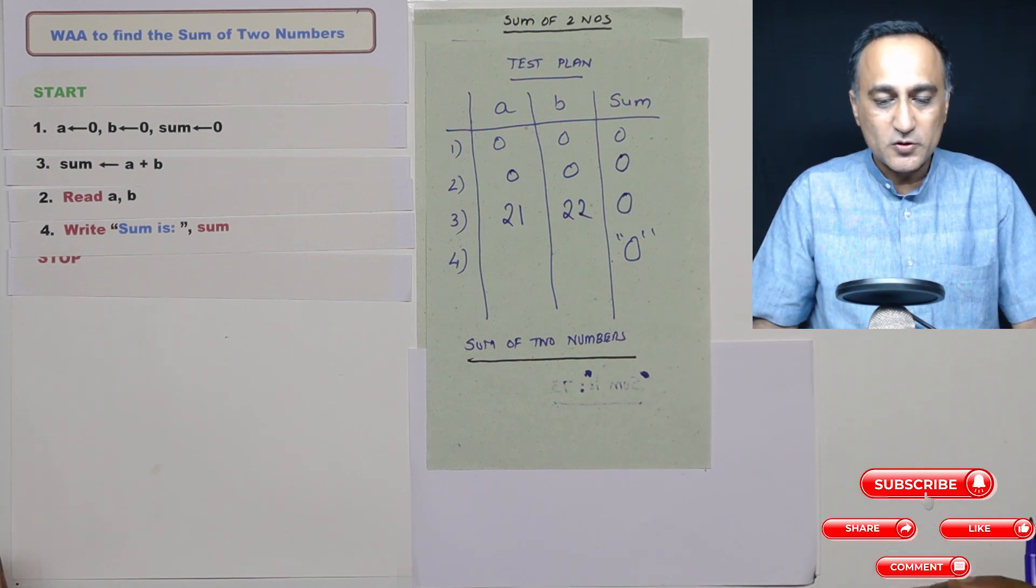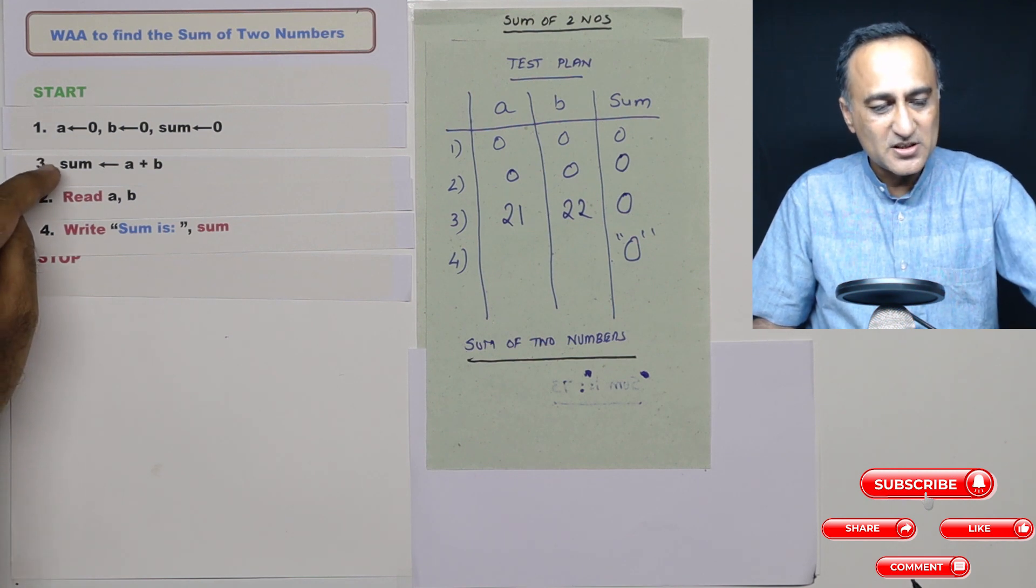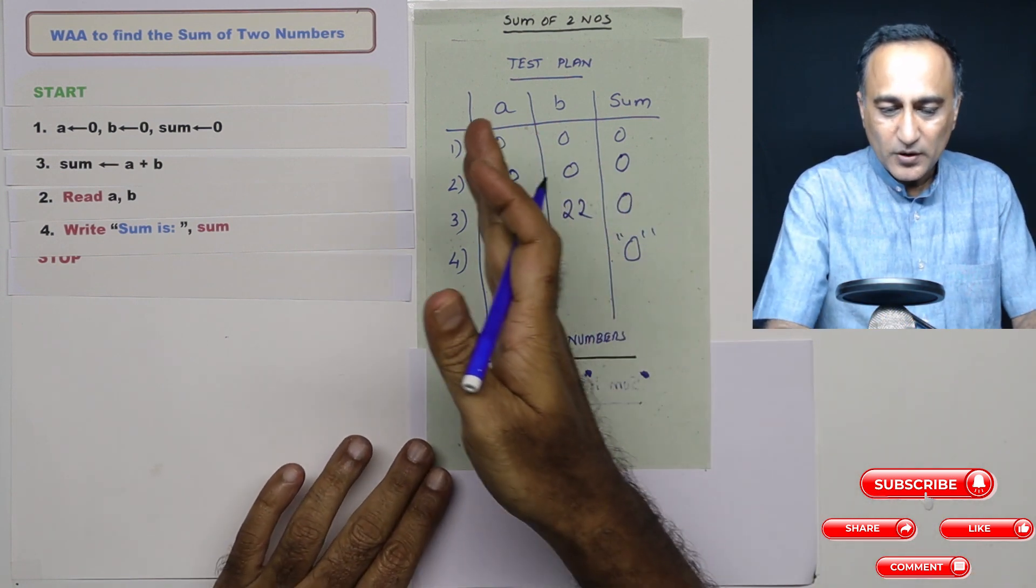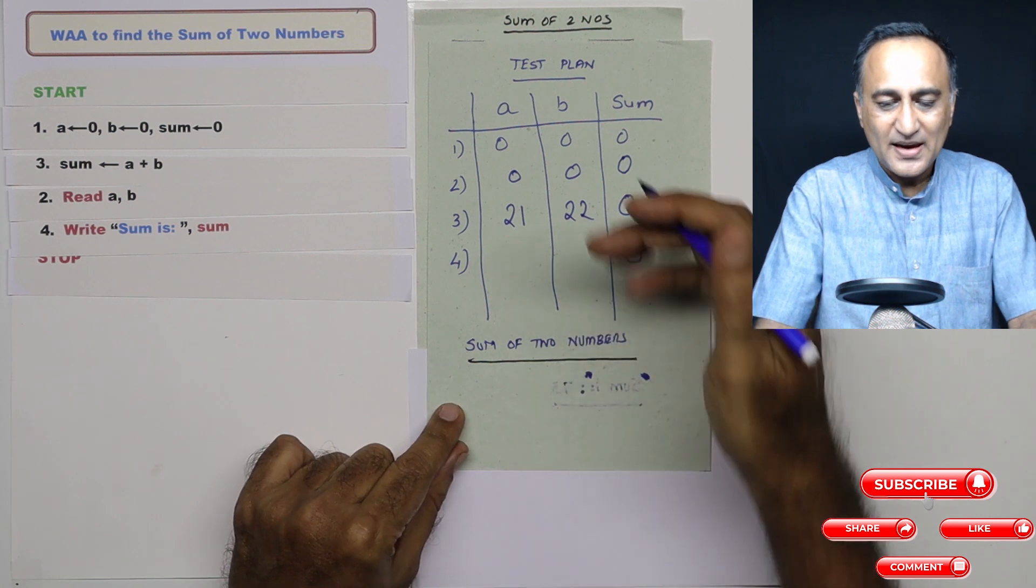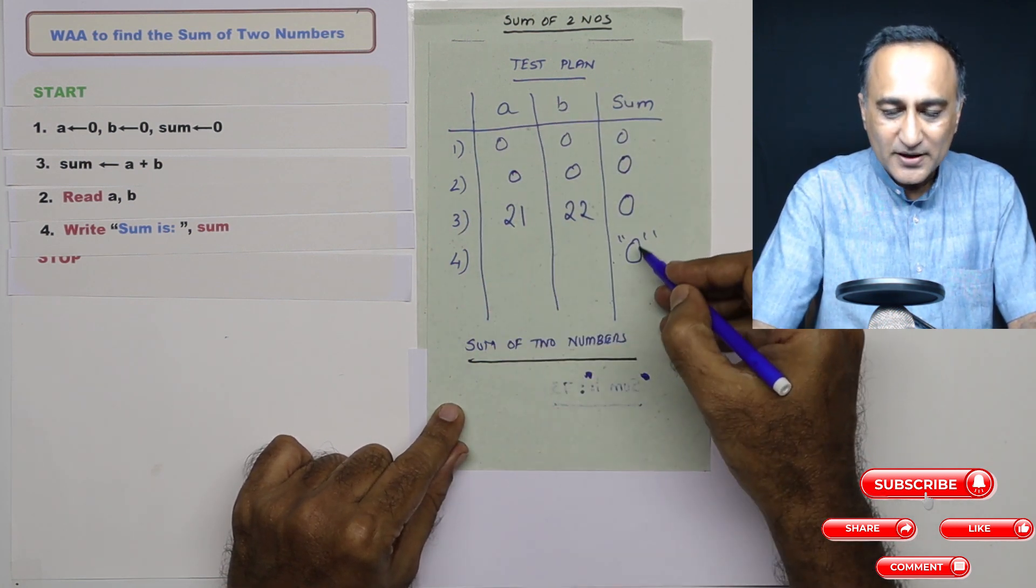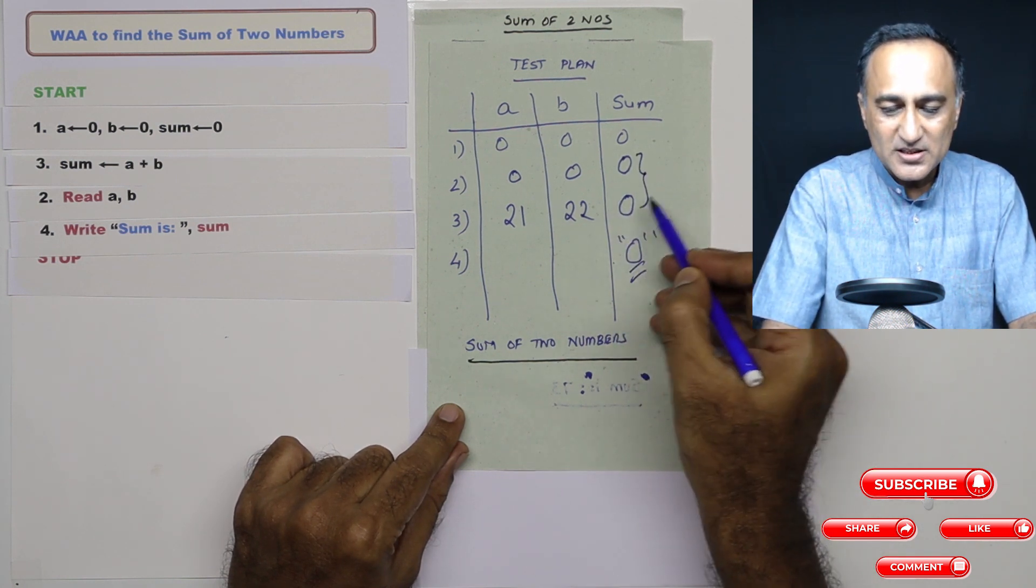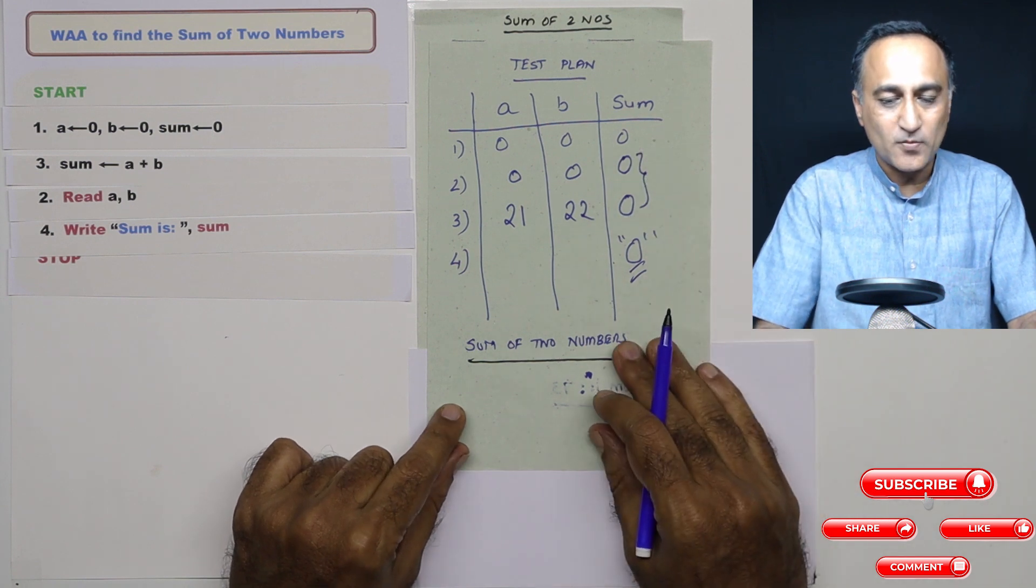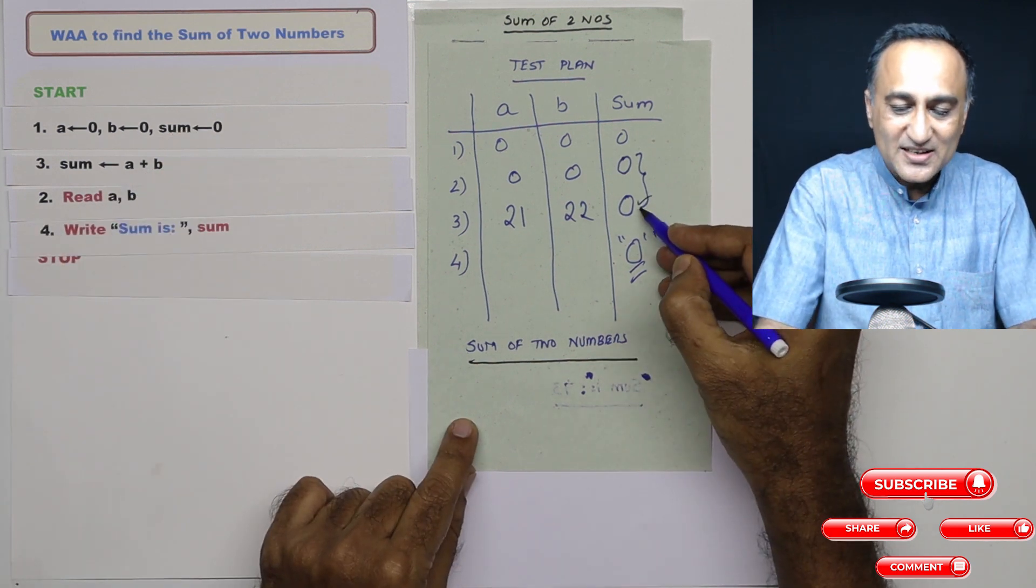So what has happened now is initially A, B all are zero and sum is zero. At step two, I have actually done sum is A plus B. So A plus B is zero. These have still remained zero. Now in the third step, now I'm reading A, B. So let's say I read 21 and 22. Then what happens is sum is still zero because I have already changed the value of sum in step two. Then when I say write sum is, it is going to print the output result as zero rather than 21 plus 22, which happened to be 43 because I did not follow a proper sequence of trying to solve this particular problem. So again, we come back to our old story, algorithm should have finite steps, the sequence should be in a proper order or a well ordered sequence.